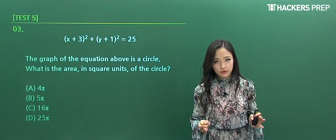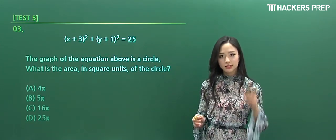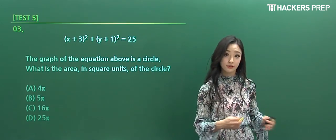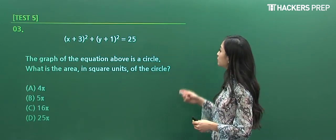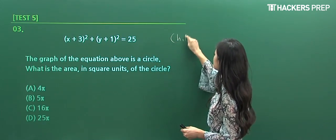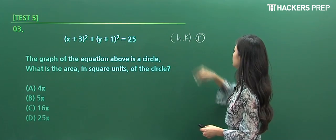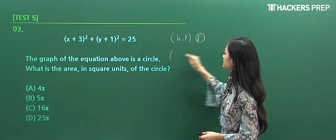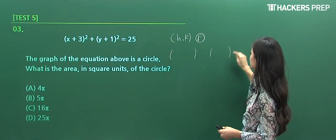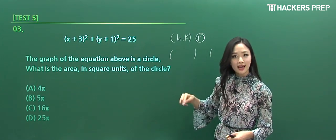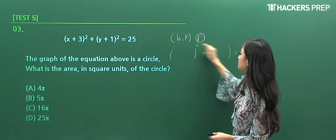Number three: the graph of the equation above is a circle. What is the area of the circle? As soon as you see this question, the first thing that should pop up in your mind is the standard formula of a circle. Let's review the concept real quick. If I have a circle with center (h, k) and radius r, the standard formula involves adding two squared terms.